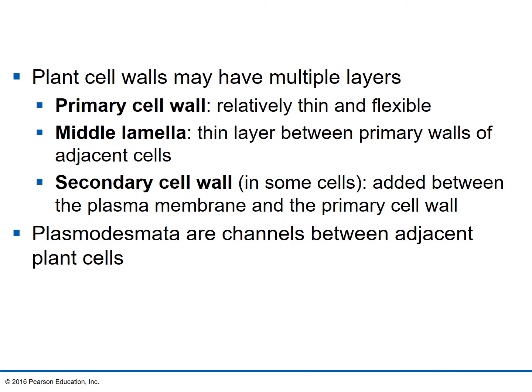The cell wall itself has some layers. The big one to know is the plasmodesmata, which can come up on a test. These are like tunnels that go from one plant cell to the next, allowing for easy exchange of fluid. Clara asked me about the middle lamella in class — the cell wall has some layers, but plasmodesmata is the key term. We don't necessarily have to put stuff into extracellular space in order for plant cells to move things back and forth — the plasmodesmata work just fine.